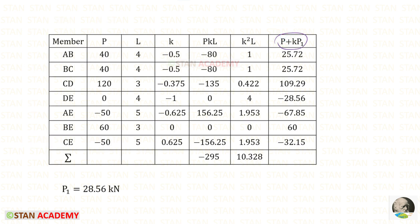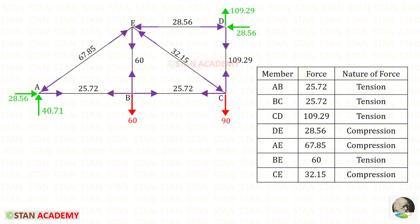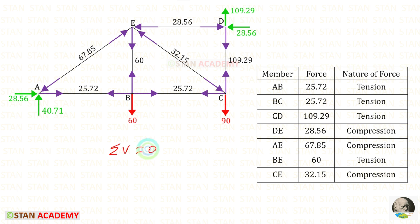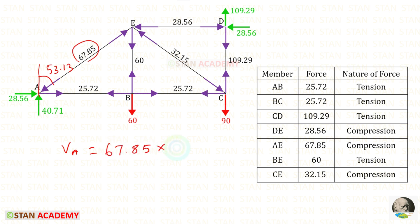Using the formula F = P + K·H_A, we can find all real member forces. All member forces in the truss are entered: positive values are tensile and negative values are compressive. At joint D there is no inclined member, so we can easily find V_ED and H_D. This force acts rightward so H_D acts leftward, and this force acts downward so V_ED acts upward. Applying Sigma V = 0, we find V_A. Alternatively, since the angle is 53.13°, V_A = 67.85 × cos 53.13° = 40.71 kN.